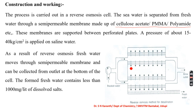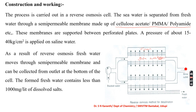As a result of applying pressure, reverse osmosis occurs. Sea water is introduced, and fresh water moves through the semi-permeable membrane and can be collected from the respective outlets at the bottom of the cell. The brine — the concentrated sea water — increases in concentration and is collected from another outlet. The resulting fresh water contains less than 100 milligrams per liter of dissolved salt.